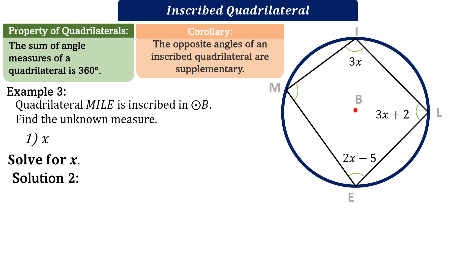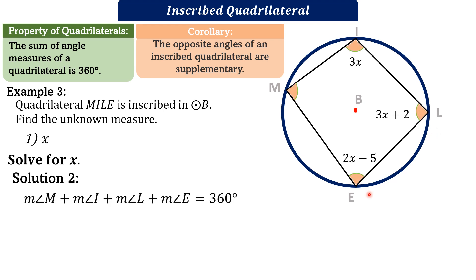For solution 2 in solving for X, we apply the angle sum property of quadrilaterals, which states that the sum of angle measures of a quadrilateral is 360 degrees. The angles of inscribed quadrilateral MILE are angle M, angle I, angle L, and angle E. So we get the sum: measure of angle M plus angle I plus angle L plus angle E equals 360 degrees.